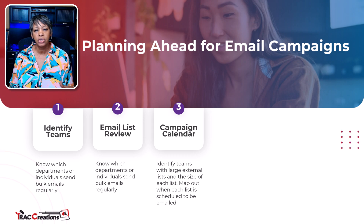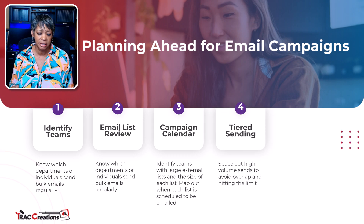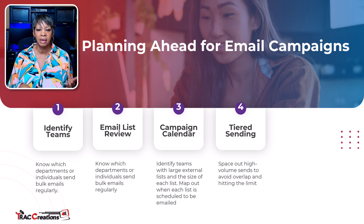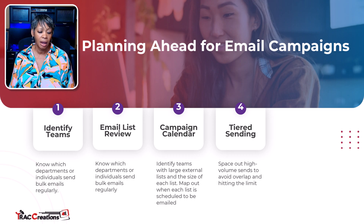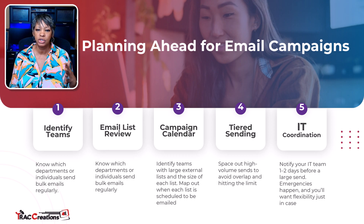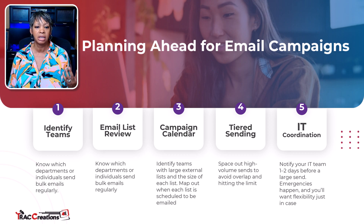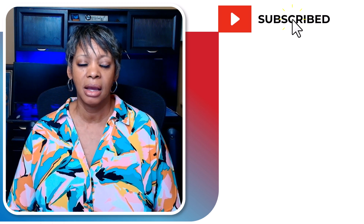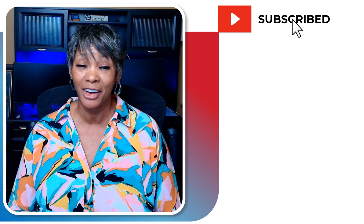For small businesses, consider a tiering or batching system. If you have a very large email list, batch sends over two or more days instead of sending everything at once — that way you stay under the threshold and avoid getting blocked. Finally, coordinate with your IT department ahead of time. Touch base a day or two before a large send needs to go out, make sure there are no emergency communications that may be prioritized, and avoid any surprises. I hope this helps — now go work your magic.